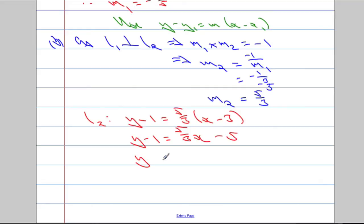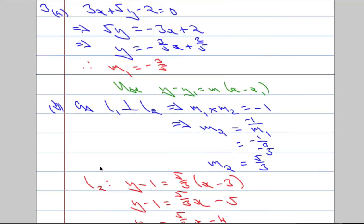Which means that y is going to equal 5 over 3x. And adding 1 to both sides, we get negative 4. So we've written the equation in the form y equals mx plus c.